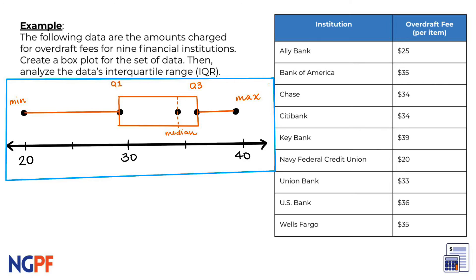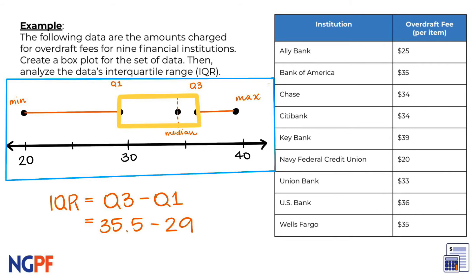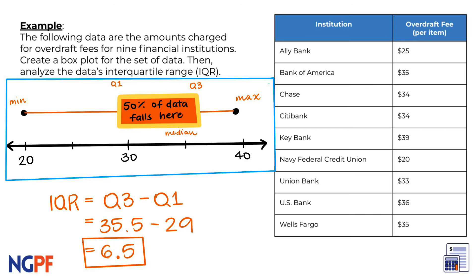Our last step is to analyze the spread and interquartile range. We can calculate the IQR by finding out how wide the box itself is, so we take Q3 minus Q1, which is 35.5 minus 29, resulting in 6.5. So the IQR of this data set is 6.5, which means that 50% of our checking account fees are between 29 and 35 dollars.